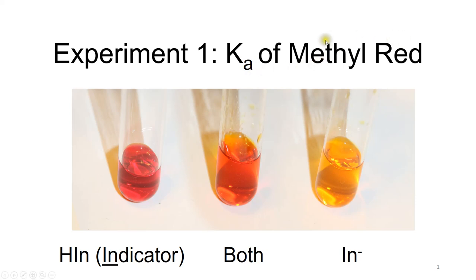What's the color of methyl red? It can be red in an acidic solution, but it can be yellow in a basic solution. Sometimes when we have both the acidic form and the basic form of methyl red, the color is orange.